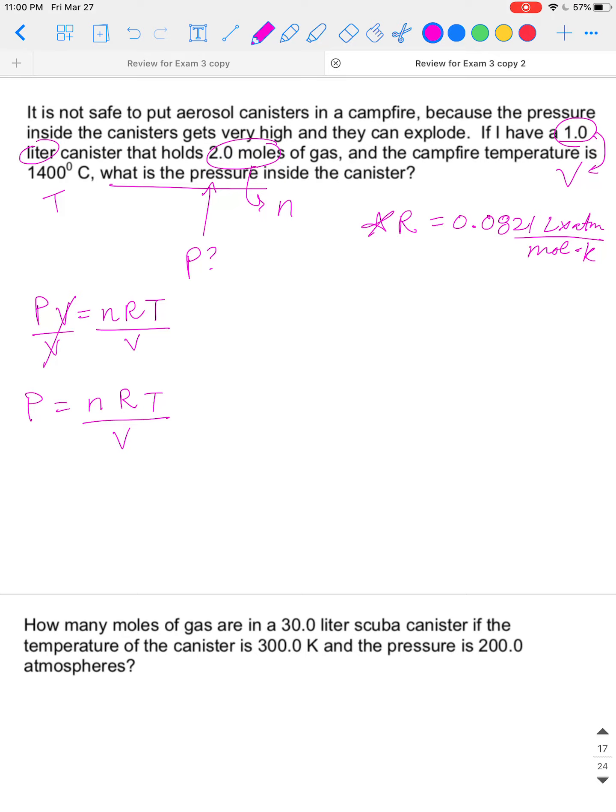So we have moles, we have liters, what we don't have is Kelvin. We have degrees Celsius. So we're going to take temperature, which is 1400 degrees Celsius, convert that to Kelvin by adding 273.15 and you should get 1673.15 Kelvin. Now I believe we can plug everything in. We have moles, liters, Kelvin. We're good to go.